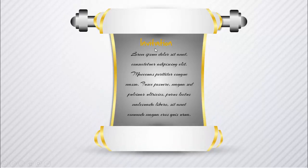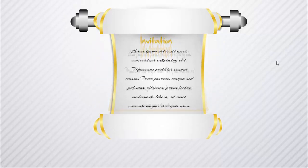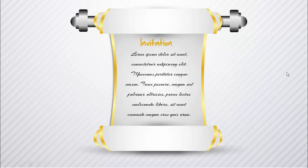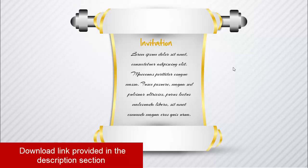In today's tutorial I'm going to show you how to make a scroll design in PowerPoint. I have created this scroll - it is closed, and the moment I click it will open and reveal the text. I've just put 'Invitation' and you can add your own text. There are two ways: one uses basic animation, and the other uses the Morph transition. If you don't have Office 365, use the first option; if you do, use the Morph transition.